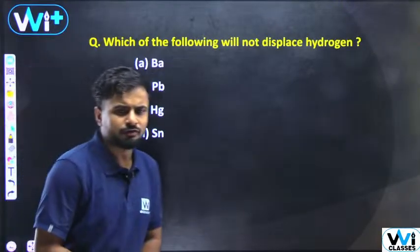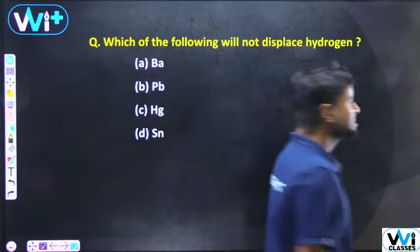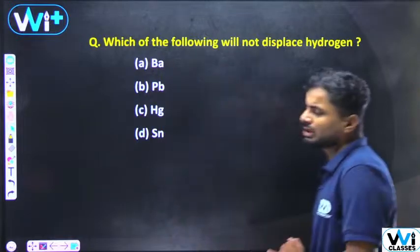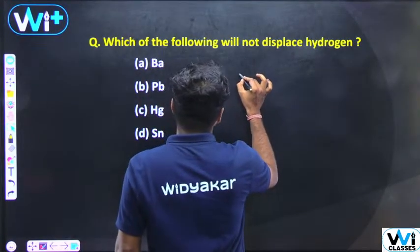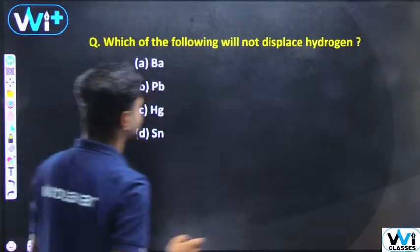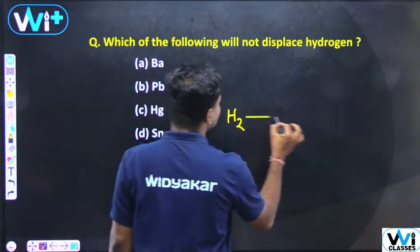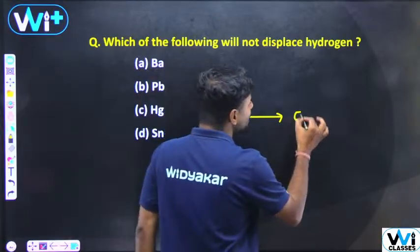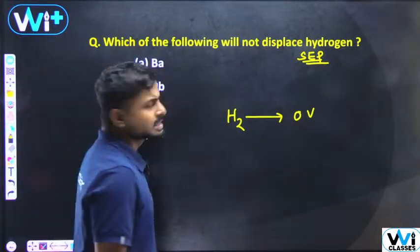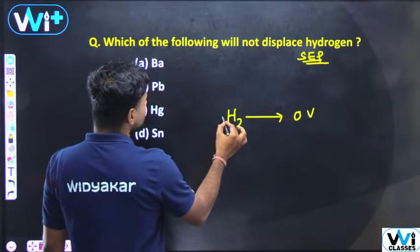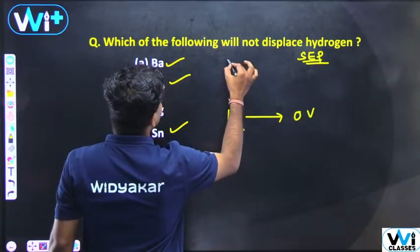Which of the following will not displace hydrogen? We will see the reactivity series — the electrochemical series. We will look at metals like barium, lead, tin — all in the electrochemical series. We will see the standard electrode potential; 0 volt is hydrogen's position.